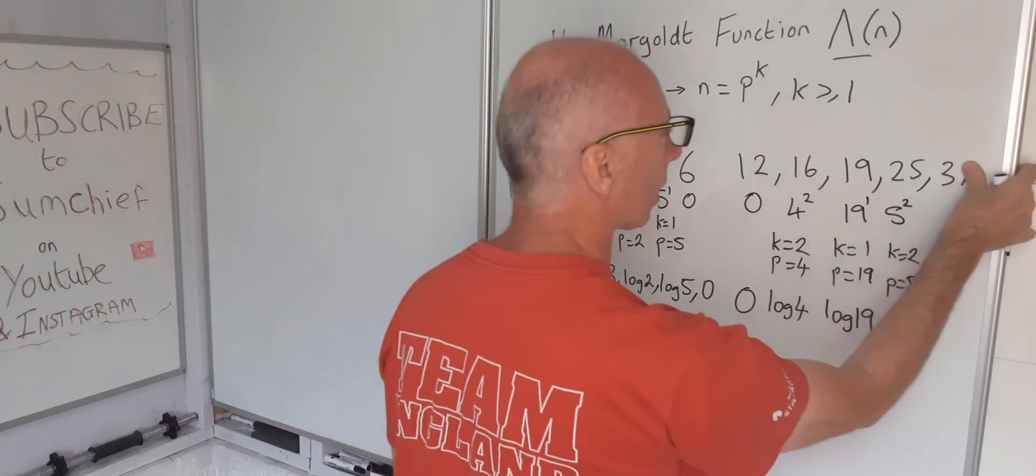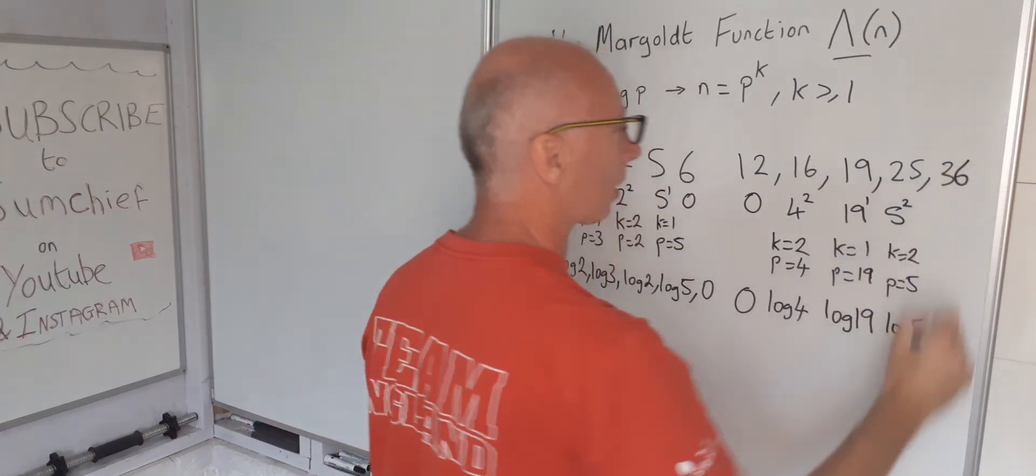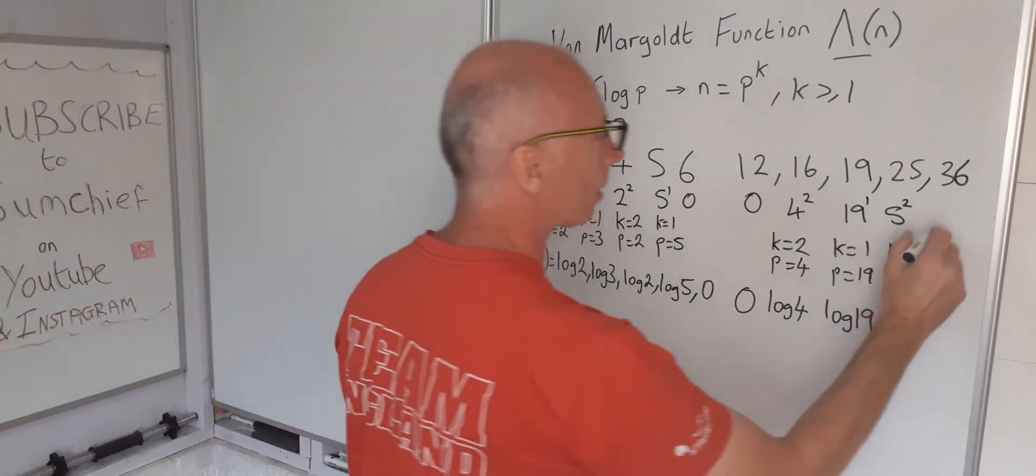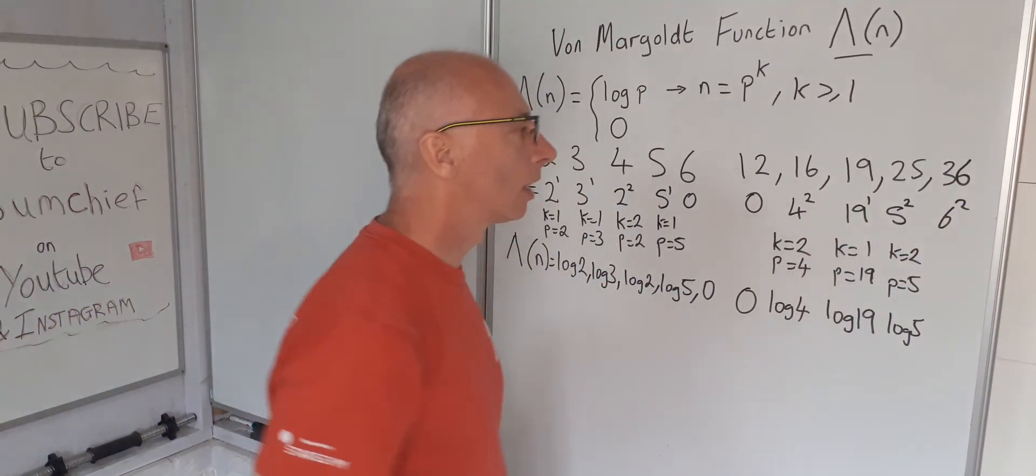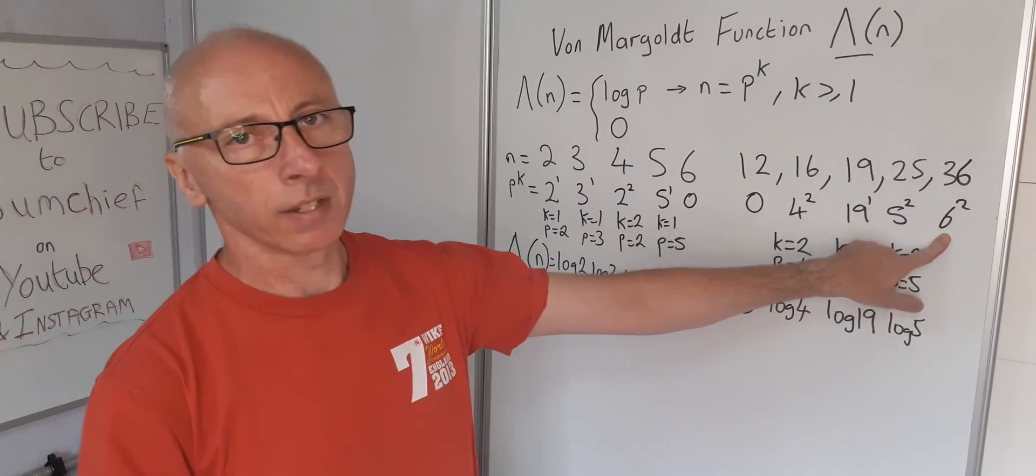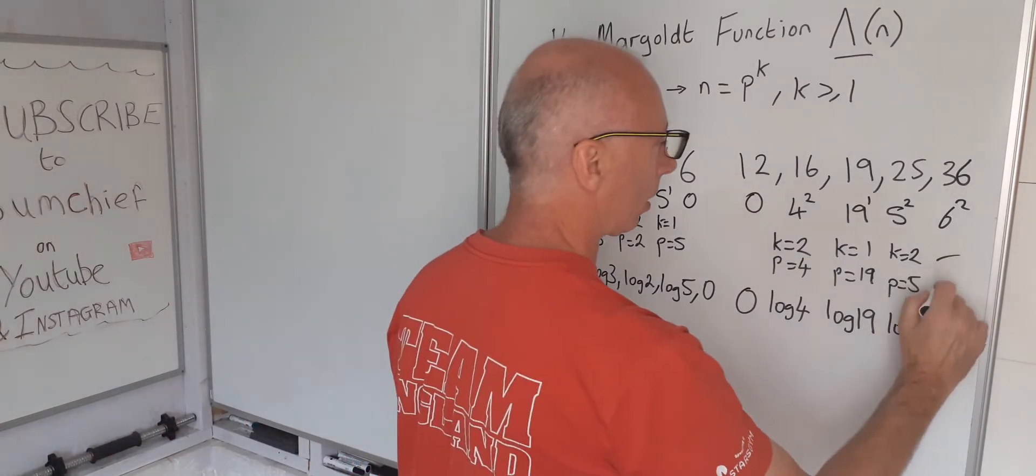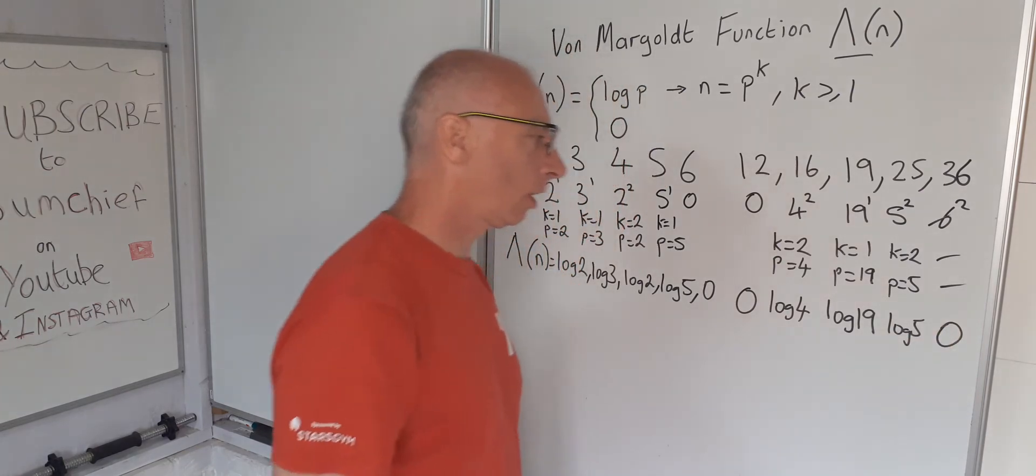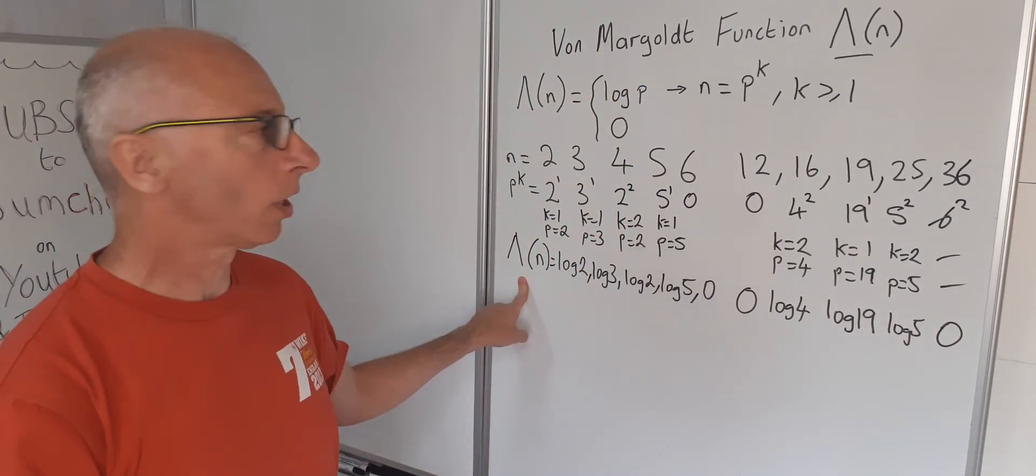Now actually let's put in here thirty-six. So that will make things a bit more interesting. So thirty-six is six squared, but six is not a prime number. So therefore this does not work. In which case we can take on the value of zero for the von Mangoldt function.